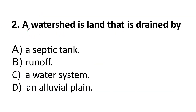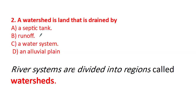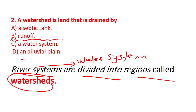Question 2: A watershed is a land drained by a river system. The options are septic tanks, runoff, water system. What is the definition of a watershed? River systems are divided into a region called a watershed. Because a river is made by water, the answer will be C — water system.